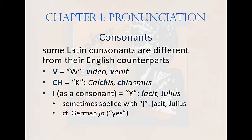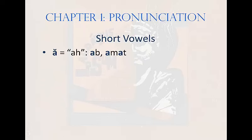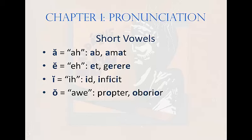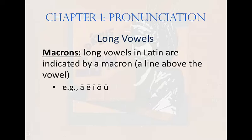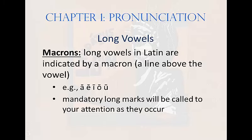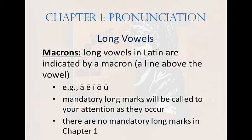Latin vowels come in one of two varieties: long or short. The short vowels are shown in the chart. Long vowels are indicated by a macron — that is, a line written above the vowel. When vowel length matters in the determination of grammatical forms, it is referred to as a mandatory long mark and must be indicated. We'll call mandatory long marks to your attention as they occur. For the record, there are no mandatory long marks in Chapter 1.